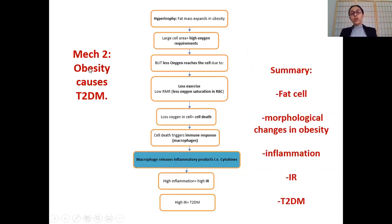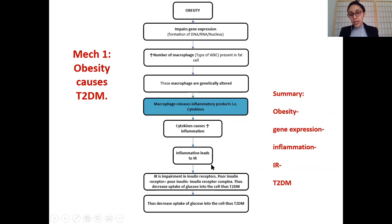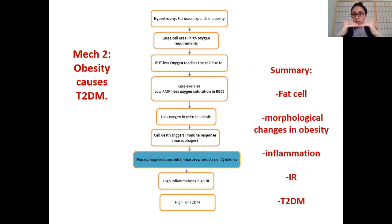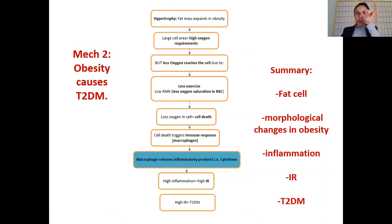Notice that both mechanisms end at the same blue box — increasing insulin resistance and therefore type 2 diabetes. That is where both mechanisms amalgamate. Right now they are bifurcated into two streams.